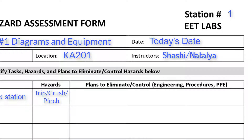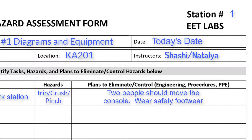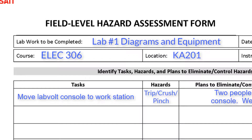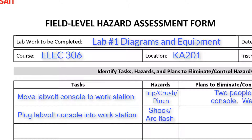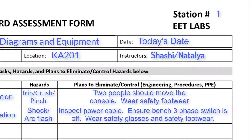Enter the plans to eliminate or control the hazard. In this example, the hazard will be controlled by using administrative and PPE methods of control. Another example of a task is to plug the LabVolt Council into the workstation. The hazards associated with this task are shock and/or arc flash. Under plans to eliminate the hazard, inspect the power cable and ensure the three-phase switch is off — these are both administrative types of control. Safety glasses and safety footwear are PPE control.